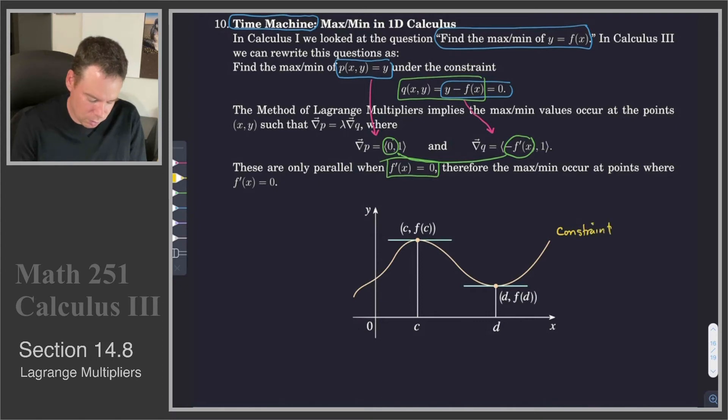So here's our constraint curve. What is our function? Our function is p of x, y is equal to y. The method of Lagrange multiplier says, look at the level curves of this function. So we'll look at the level curves. That's where p is equal to a constant, or in other words, where y is equal to k. So these are horizontal lines. So our level curves are horizontal lines.